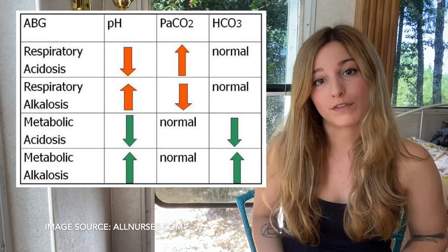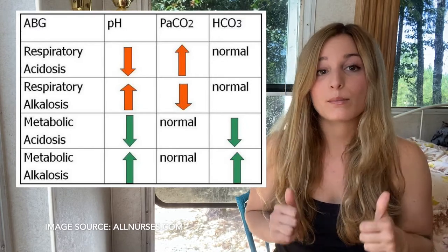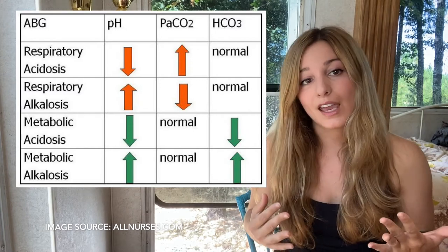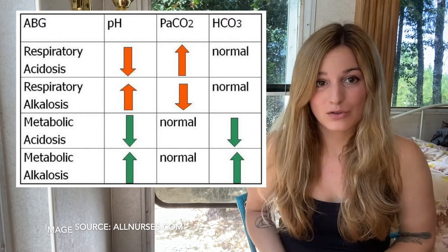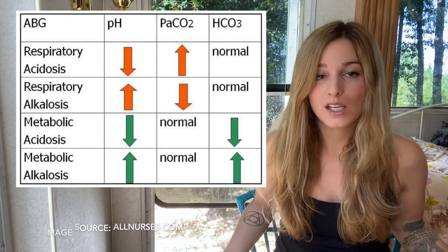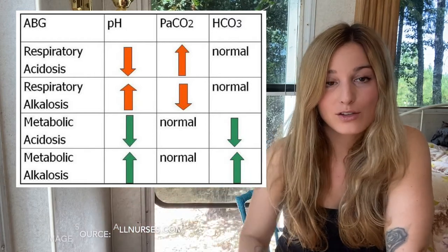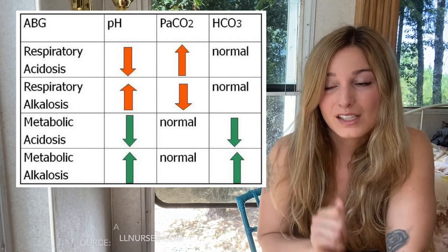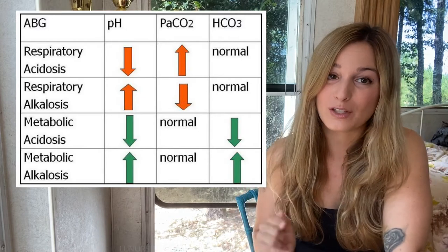Metabolic alkalosis: pH is high, above 7.45; CO₂ is normal; bicarb is now high. Things that can cause metabolic alkalosis are prolonged vomiting, nasogastric drainage, and loss of potassium, which also happens with vomiting. When you vomit, your vomit is acidic — you're releasing that acid, so naturally you become more alkaline. When you have diarrhea, diarrhea is alkaline, so your body compensates and becomes more acidic.